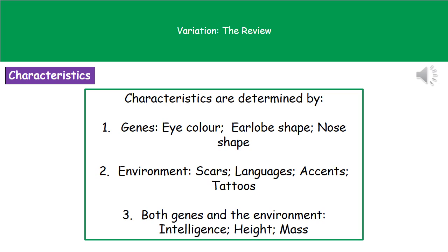The second is the environment, which would include your scars, the language you speak, the accent you have, or if you've got tattoos. Finally, certain characteristics are determined by both genes and the environment, such as intelligence, height, and body mass.